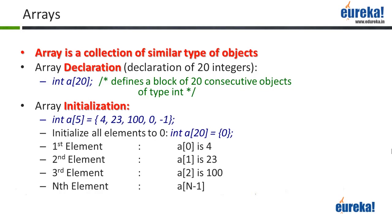C doesn't stop me. I can go and declare int a1, a2, a3 and so on until a100, and store each number in a separate variable. But with 100 variables — or if you want 1000 variables — it just becomes very difficult to write your program, and managing those variables is a much bigger task. C has a way to declare a large collection of objects of similar types: they're called arrays.